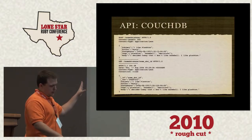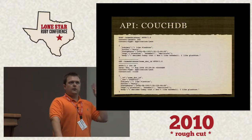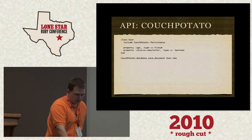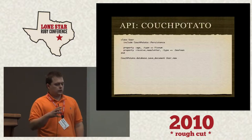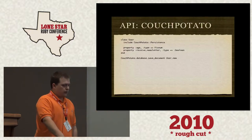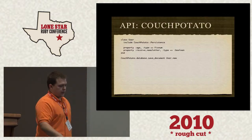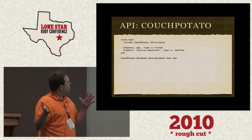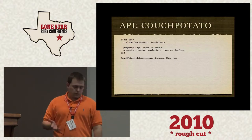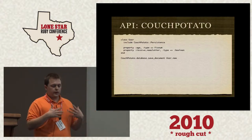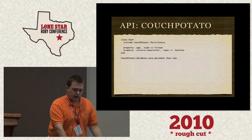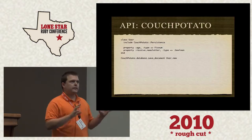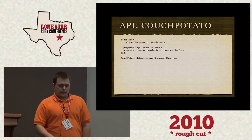With CouchDB, you connect to it by posting JSON, getting it by ID, and then you get JSON back. In a Rails project you'd likely use a wrapper around the JSON — one that's out there and pretty good is CouchPotato. You include a set of methods, declare your properties, and when you want to create a record, you connect to the database and say CouchPotato.database, save document, then the user. It's a bit different syntax compared to your general .save or .create.